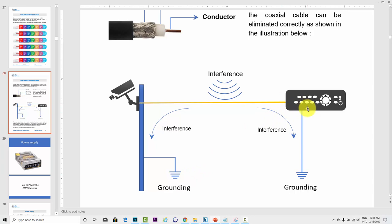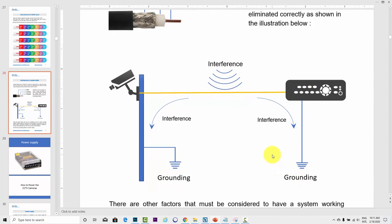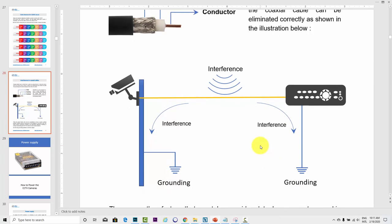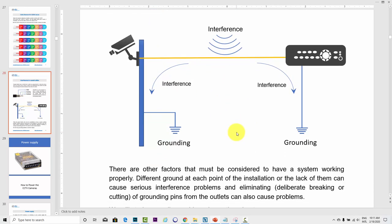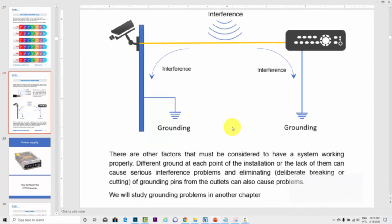You can also ground your DVR just like that. So the interference comes to the cable, goes to your DVR, and goes to the ground. Just make sure you have the correct ground and also the correct cable with quality and good braid, so you can avoid all those bad interferences in your system.